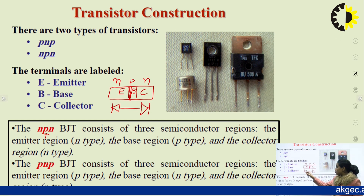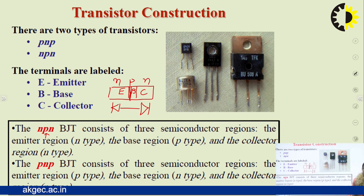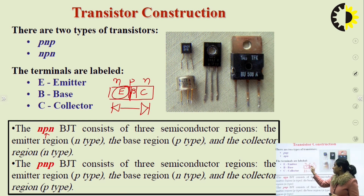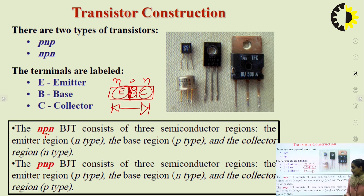Although it looks like two diodes in series, practically their working is not independent of each other — the working of each diode is not independent of the other. The name NPN or PNP is given as per the type of doping: if the emitter and collector have N-type majority carriers and the base has P-type, it is called NPN, or vice versa for PNP.